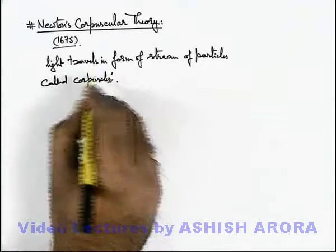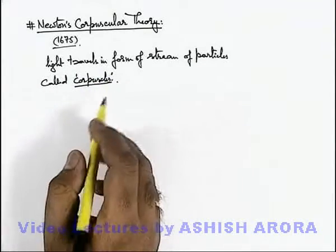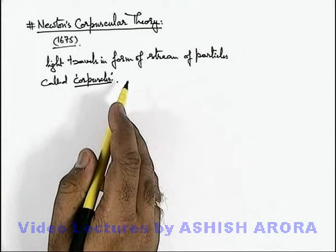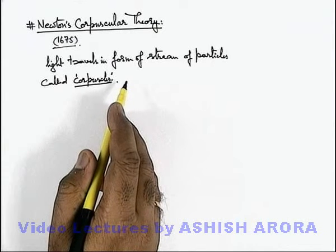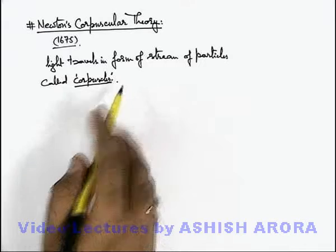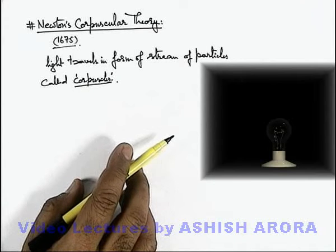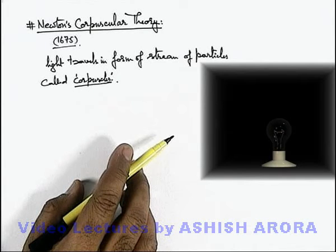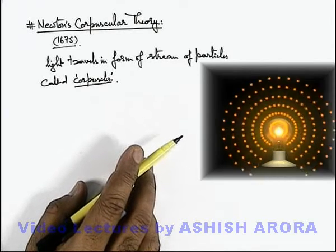These corpuscles are light particles which are emitted by the source of light, depending on the direction in which light is emitted. As you can see here, if there is a point source of light — a bulb — according to corpuscular theory, the bulb emits light in all directions.